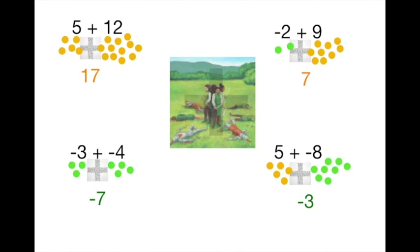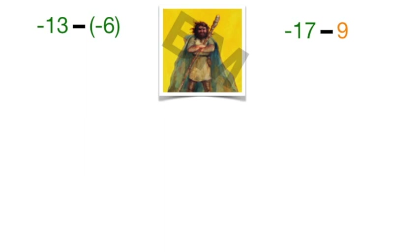Every single addition problem with integers can be told in a story like this. You don't need all the pictures — just look at the problem and determine who's showing up. The answer will be positive or negative based on who wins, and the amount comes from the difference when opposites show up or the total when the same team shows up. For subtraction, we have a similar situation, but this time the wizard is involved.